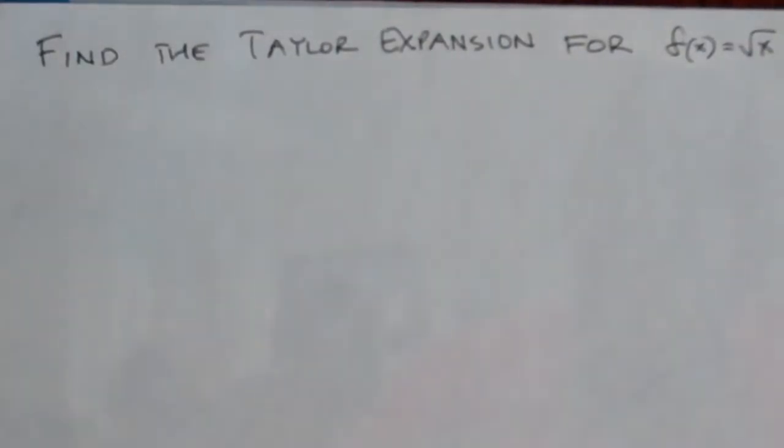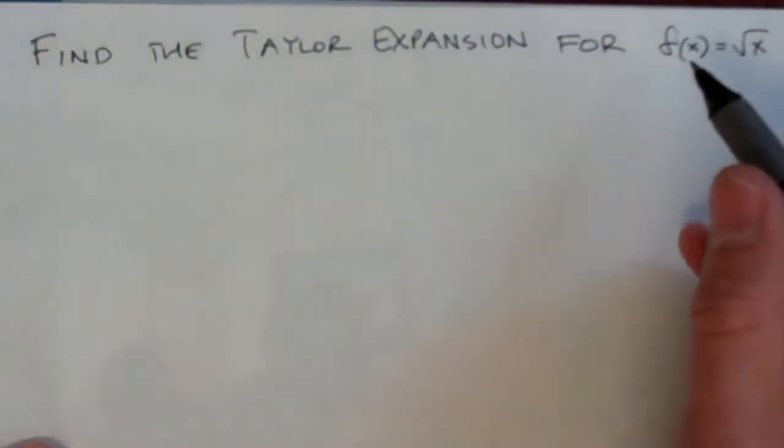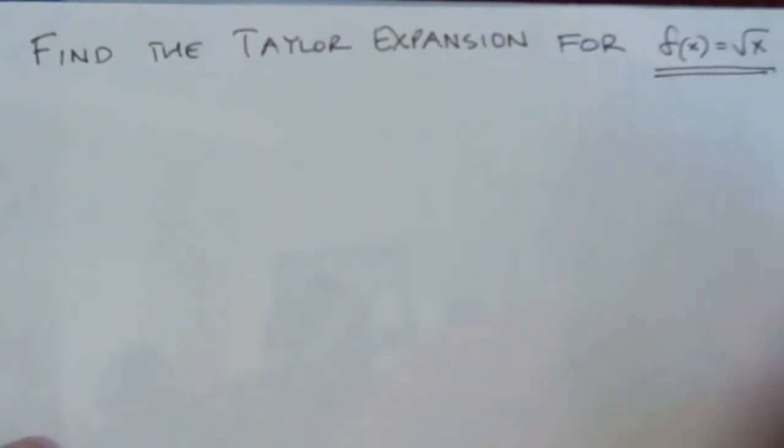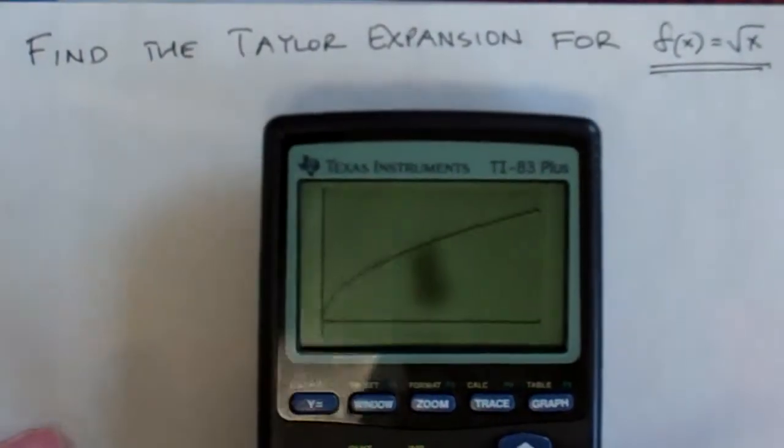Okay, we are trying to find the Taylor expansion for a simple function just to show how it's done, emphasize the key parts. So I chose f of x to be just the square root function. I graphed it here. Hopefully you can see that.